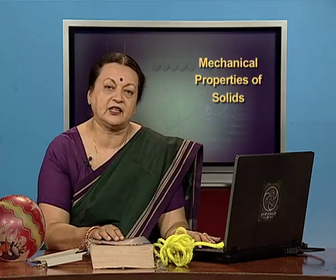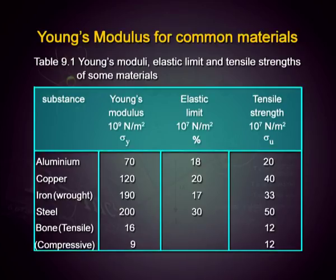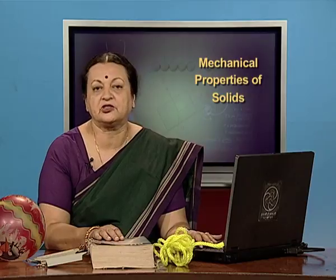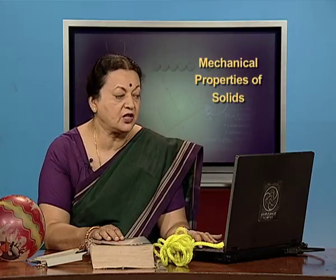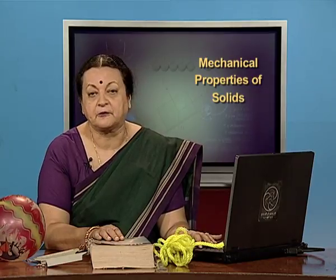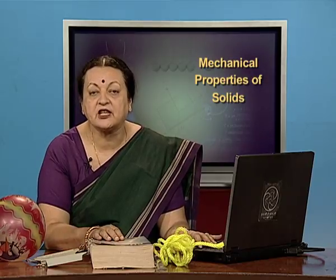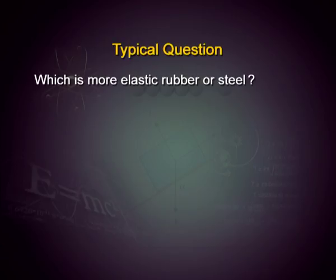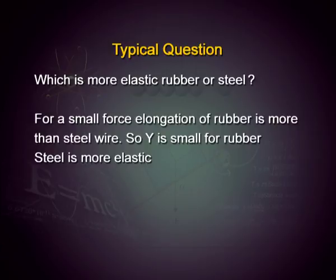If you look at some common materials and study Young's modulus, notice that the order of magnitude is 10⁹ Newton per meter square, which is a very large value. For steel, it is 200 × 10⁹ Newton per meter square. In the same table you can also see the elastic limit value and tensile strength. When asked which is more elastic — steel or rubber — steel is more elastic compared to rubber, because you can break a rubber band with your hands but it is not possible to do so for a metal wire.